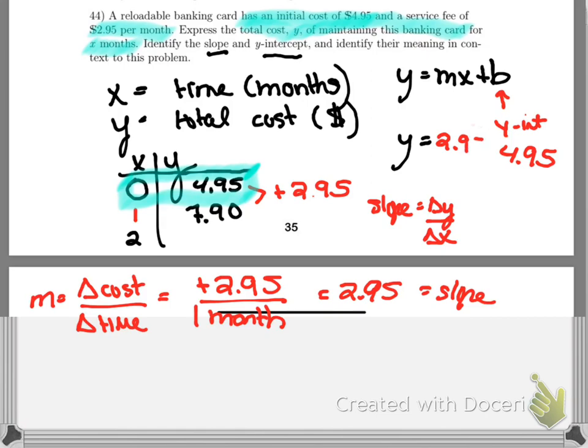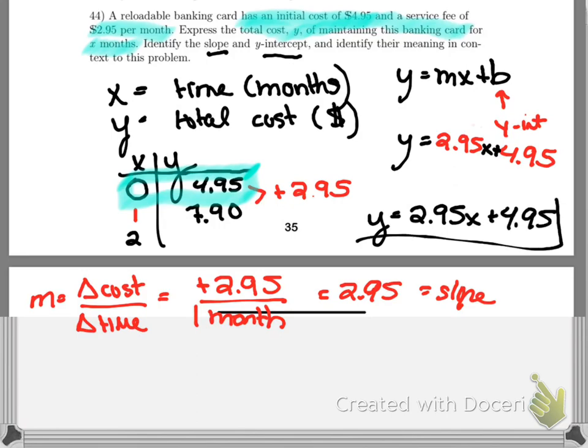So my final equation is $2.95 times X plus $4.95. I'll write that better down here. We have Y equals $2.95X plus $4.95.